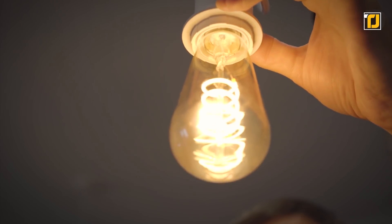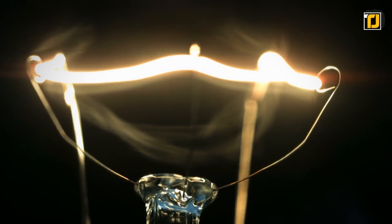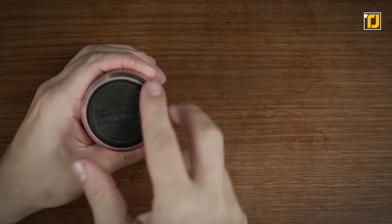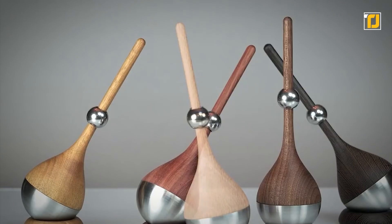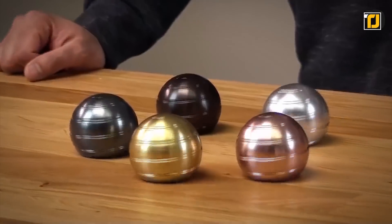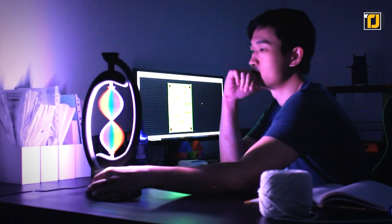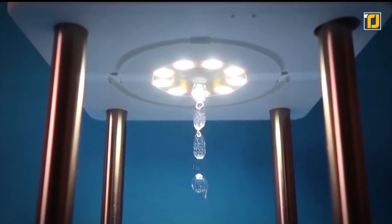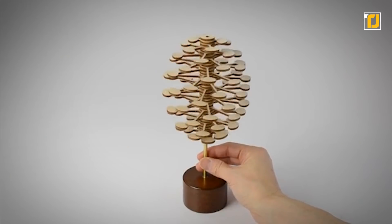Science gave us electricity and modern life, but it isn't all boring experiments and complicated theories. There's a fun side to science that we barely get to see. So let's take a look at some awesome wobbly toys, kinetic lamps, and optical illusions like water that flows uphill that wouldn't have been possible without science.